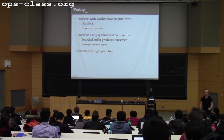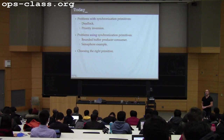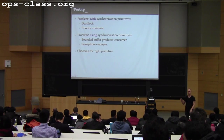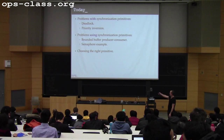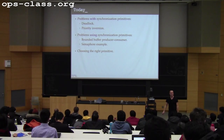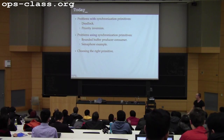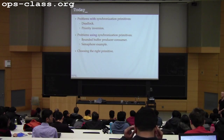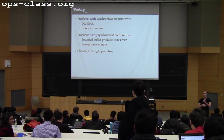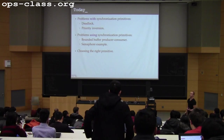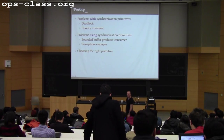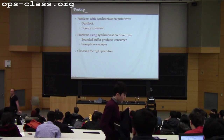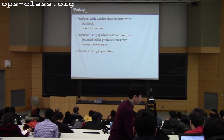We're going to finish up synchronization today. We'll talk about two types of problems you might encounter when using synchronization primitives. We're not going to talk about priority inversion today — that's a bug we'll cover later. Then we'll talk about how to use synchronization primitives to solve one or two synchronization problems, including a bounded buffer producer-consumer problem using a condition variable.